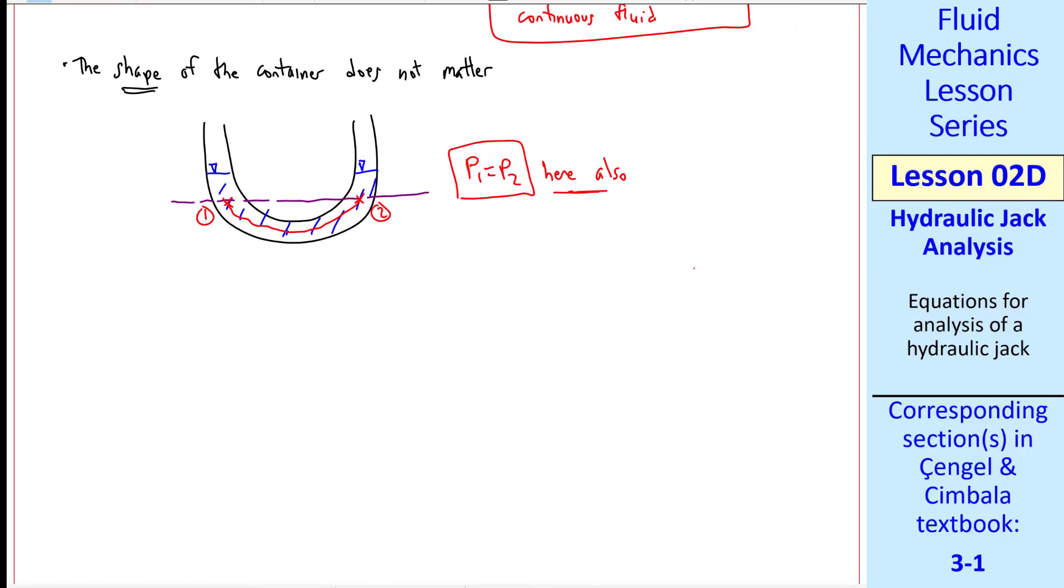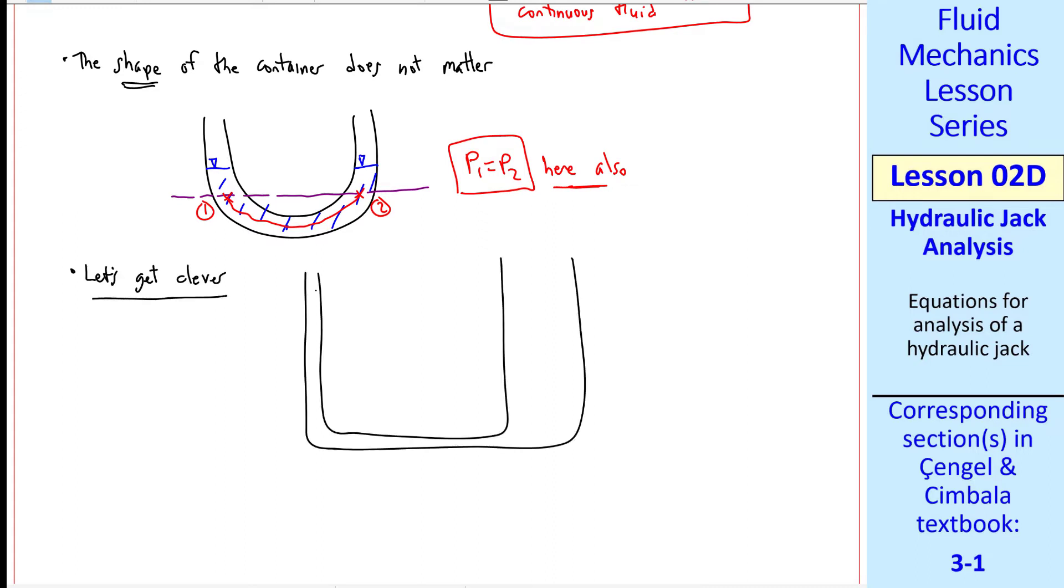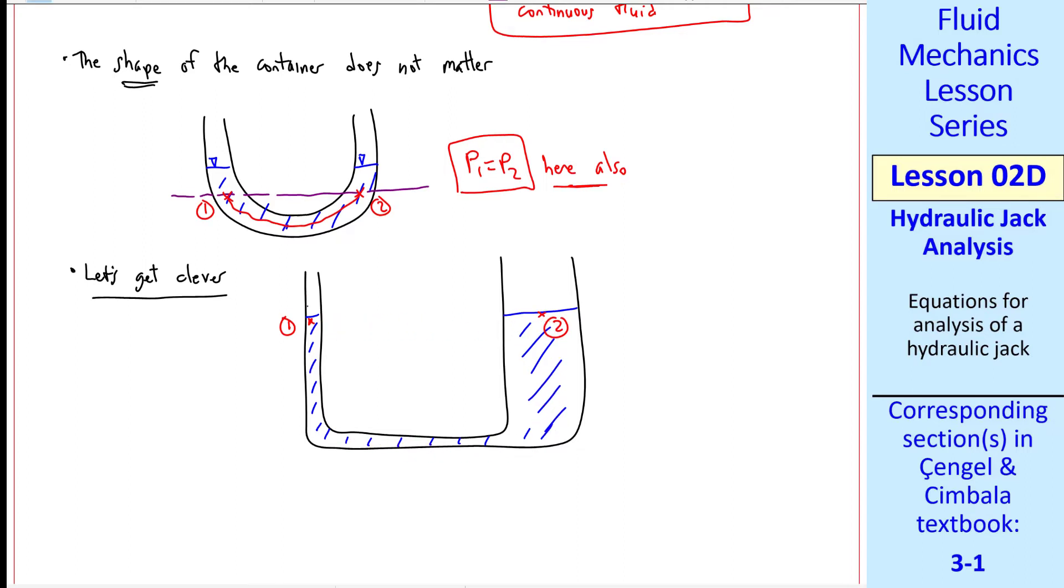This leads us to a hydraulic jack. Let's get clever here, where we make one of the legs much bigger than the other. Again, we add liquid to the container. This time, let's let 1 and 2 be just below the surface. By the way, if both of these sides are exposed to atmospheric pressure in either of these cases, the liquid will rise to the same level in each leg.